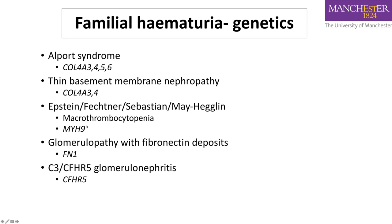There are rare mutations in fibronectin-1 causing glomerulopathy with fibronectin deposits. More recently, we have a better understanding of the role of complement and complement-related genes in familial microscopic hematuria. Many of these genes are now included in genetic screening panels available in Europe and North America. It's very likely there are more genes to discover through whole exome and whole genome sequencing currently underway.